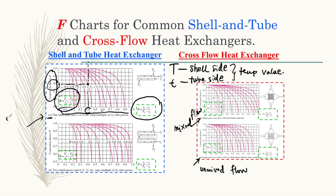So A is for one shell pass, B is for two shell passes. If you are referring to a shell and tube heat exchanger, there will be two different charts. If your question specifies one shell pass with two, four, or six tube passes, you refer to figure A.